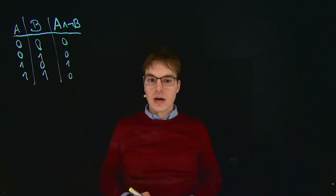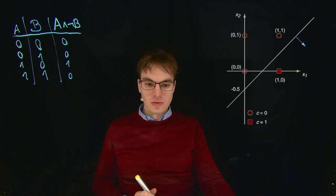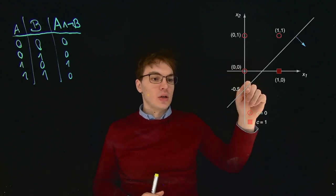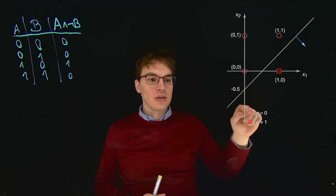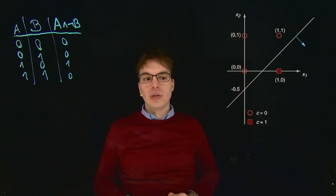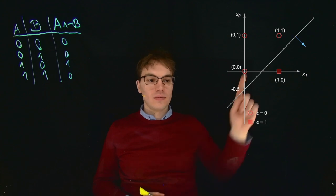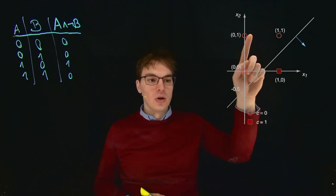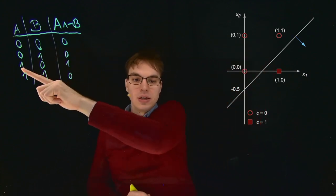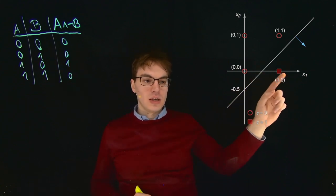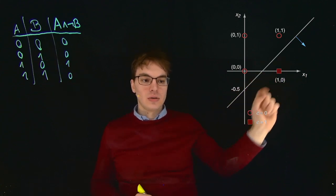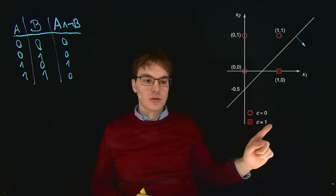So now we want to draw this into a coordinate system. We have on this axis X1, on this axis X2. And we can see that for the four points that we want to consider, only in the case X1 is 1 and X2 is 0, only in that case we get a true value. So C equals 1.